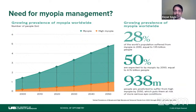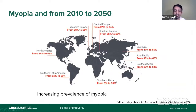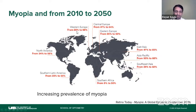Let's look at individual countries and continents. This map summarizes studies by region showing the condition in 2010 and projected prevalence in 2050. In Western Europe, myopia goes from 28% to 56%. Central and Eastern Europe show similar trends, reaching around 50%. East Asia, Asia-Pacific, and Southeast Asia already had high prevalence — 47%, 50%, and 39% respectively — and are projected to rise to 65%, 66%, and 72%. These are quite high numbers; two out of every three individuals in those regions will have myopia.